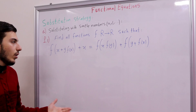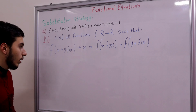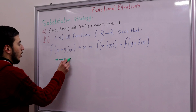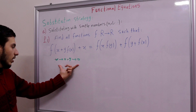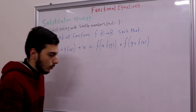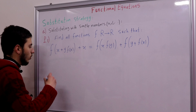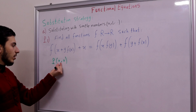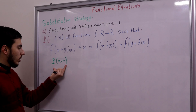The simplest substitution is replacing both x and y with 0. We'll use a notation that simplifies this process, which you'll often see in Olympiad solutions: P(0,0). This means replace each x in the equation with 0 and replace each y in the equation with 0.